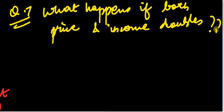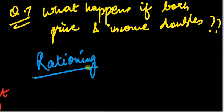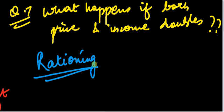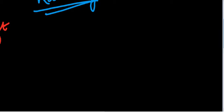The next concept is rationing. You may have heard this word at home — 'this year we'll have to ration because we are out of resources' — or in a country's budget, such as rationing the amount of water because it's not available for everyone, or ration cards. So what is rationing? It says: this is the budget line that I have, with intercepts M/P1 and M/P2.